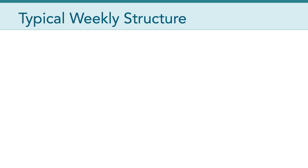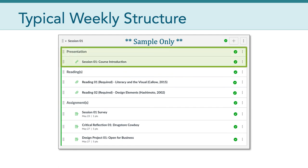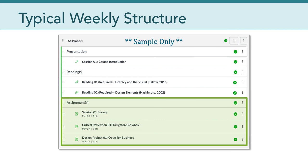Now let's talk a little bit about the typical weekly structure of LTCH 623. Each module released every week will look something like this. The first section is the presentation section — in most weeks, I will release a dedicated video like this one, which you're responsible for viewing. The next section has the readings for that week, and there may be more than one. Sometimes readings will be optional, so you might want to save those for later. Finally, there's the assignment section of each module, which may have different due dates for different assignments — so pay attention to those details.